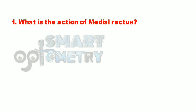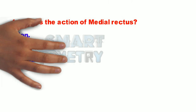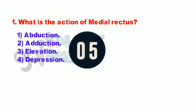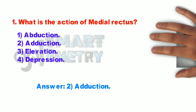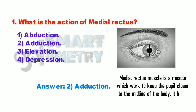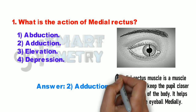Q1. What is the action of medial rectus? 1. Abduction. 2. Adduction. 3. Elevation. 4. Depression. Medial rectus muscle is a muscle which works to keep the pupil closer to the midline of the body. It helps to move the eyeball medially.